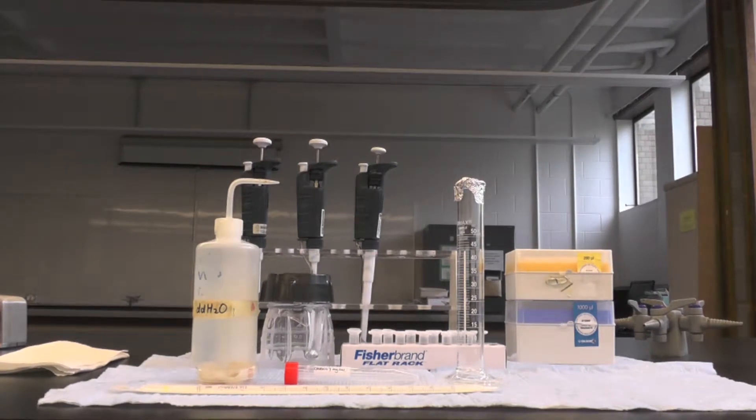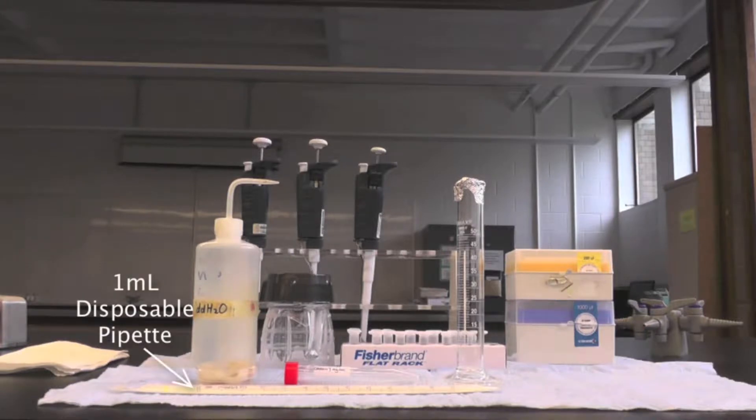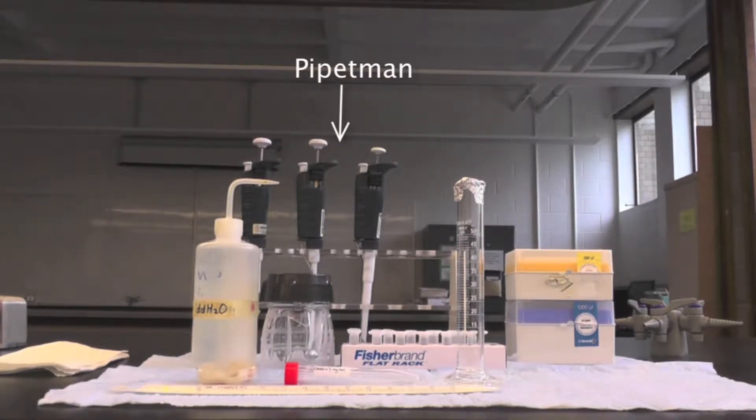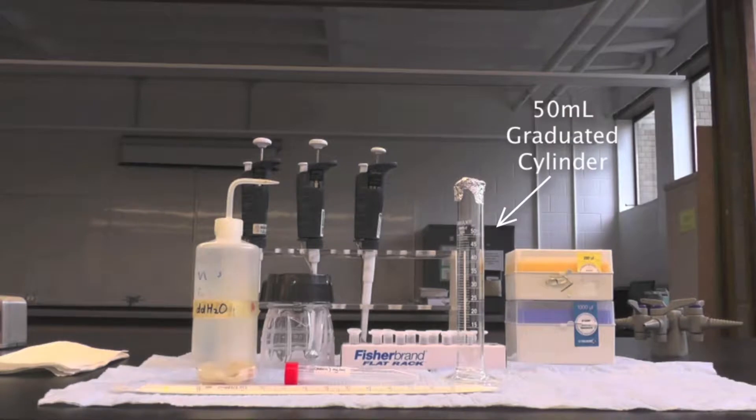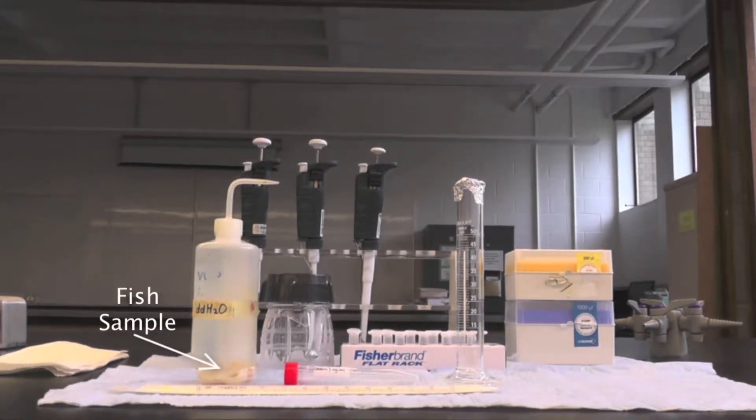The equipment you will need include DD water, blender cup and motor, 1 mL disposable pipette, pipetment pipettes, pipette tips, 15 mL falcon tubes, microfuge tubes, 50 mL graduated cylinder, and your fish sample.